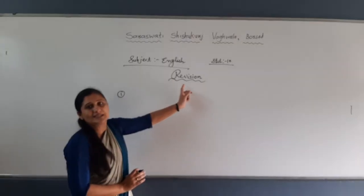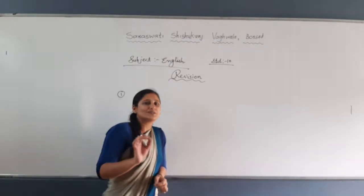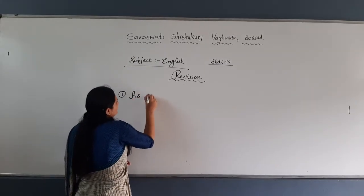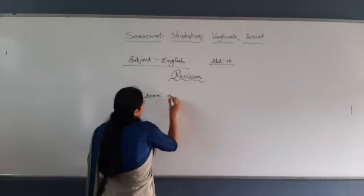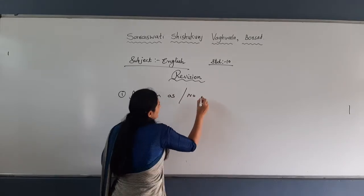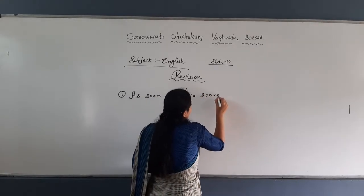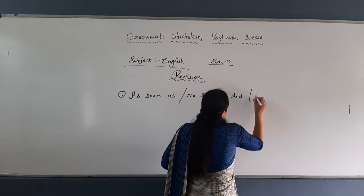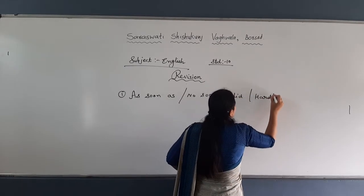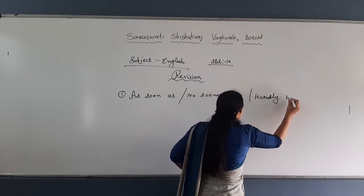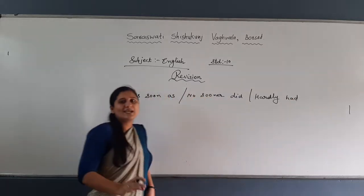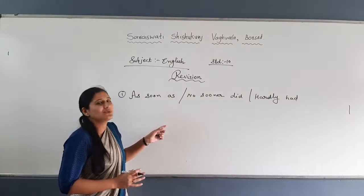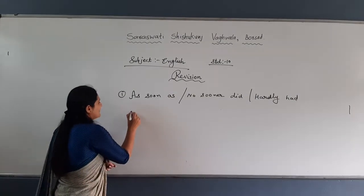So today in revision, we will cover dual selective. Today I will take the first one: 'as soon as,' 'no sooner,' and 'hardly had.' I will explain through one example. All three are taken together because with one example I will show you how to turn the sentence into all three forms.